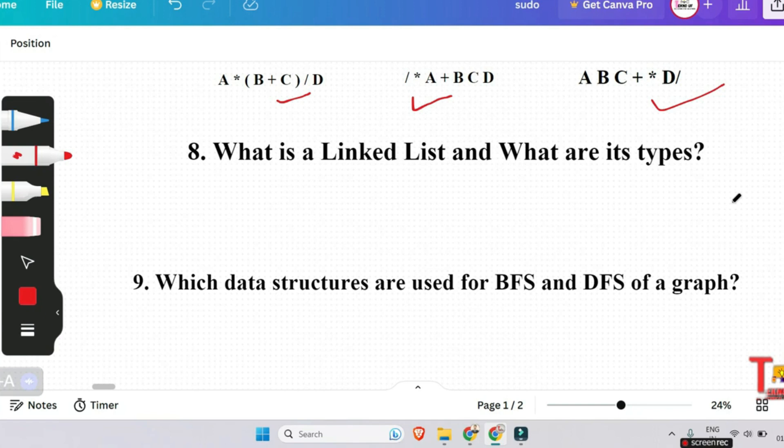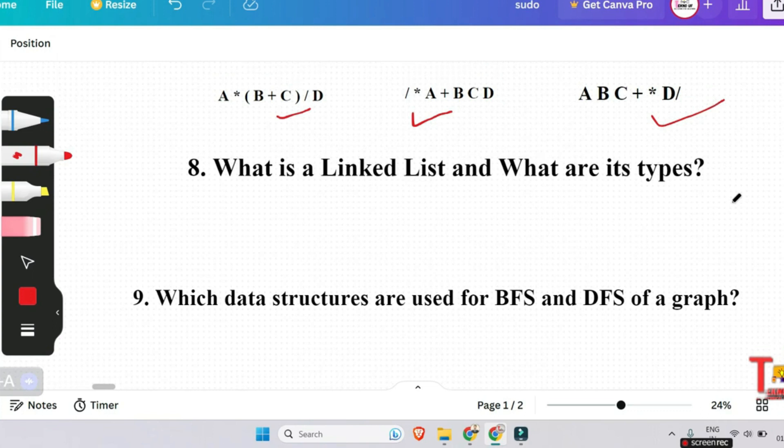So what is singly linked list? In this type of linked list, every node stores addresses or reference of the next node in the list and the last node has next address or reference as null. So what is the doubly linked list? In this case, there are two references associated with each node. One of the reference points to the next node and one to the previous node. And what is the circular linked list? Circular linked list is a linked list where all the nodes are connected to form a circle. There is no null at the end. A circular linked list can be a singly circular linked list or a doubly circular linked list as well.